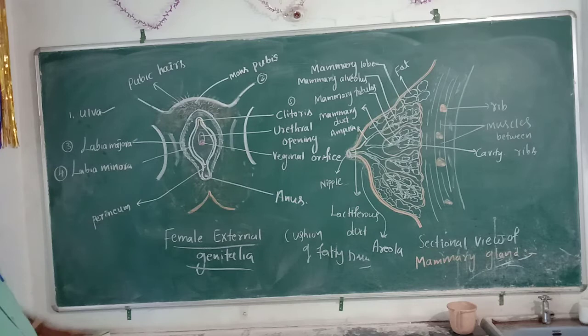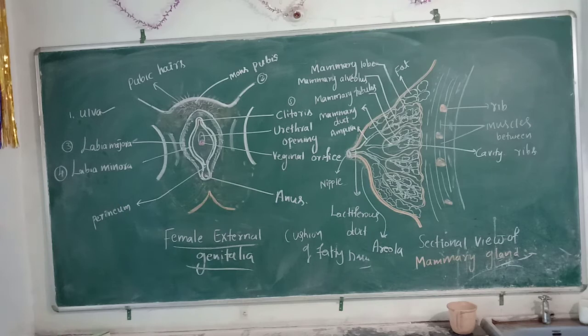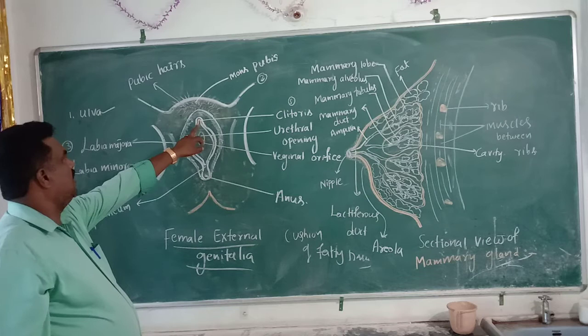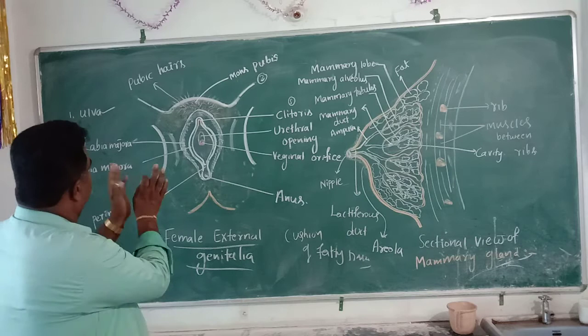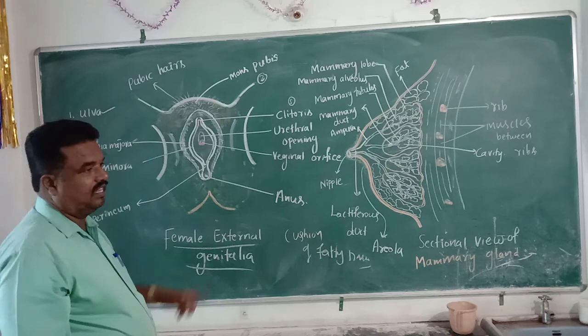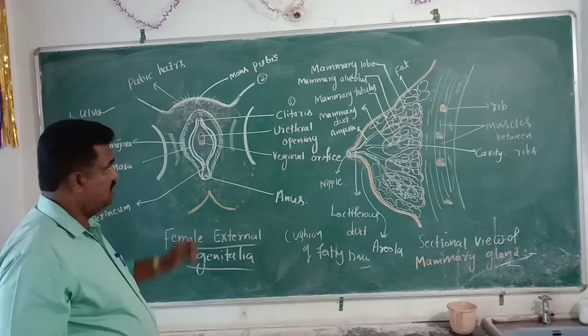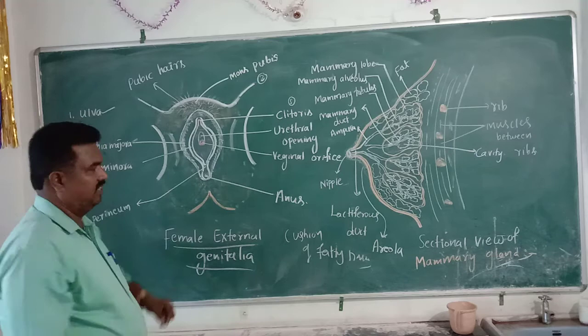Clitoris is a small finger-like projection or structure which is present just above the labia majora and just below the mons pubis. This small finger-like structure present in the upper portion of the labia majora is called as clitoris.